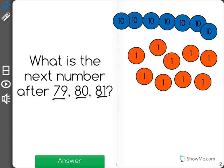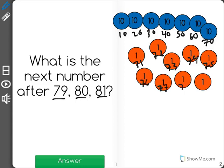As you can see here, these manipulatives show 79: 10, 20, 30, 40, 50, 60, 70, 71, 72, 73, 74, 75, 76, 77, 78, 79. That's the first number of our series, 79.